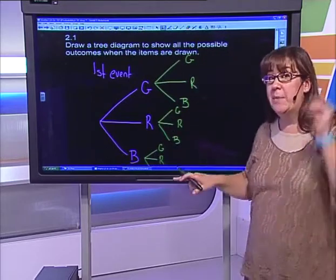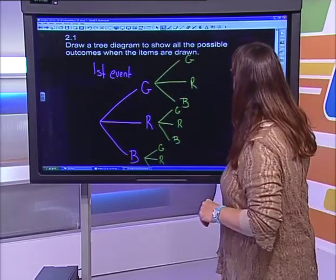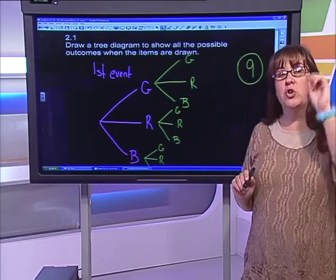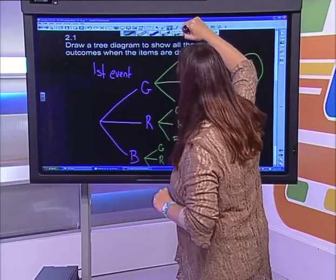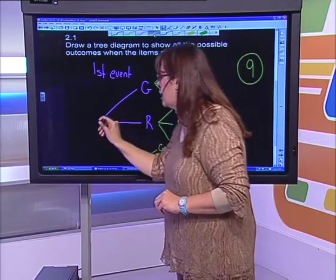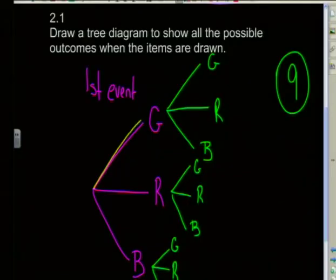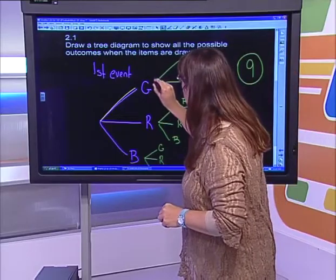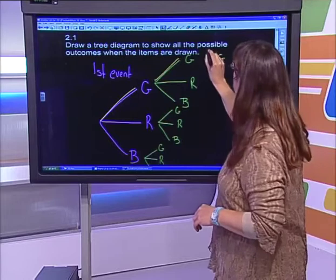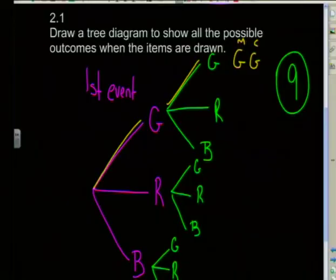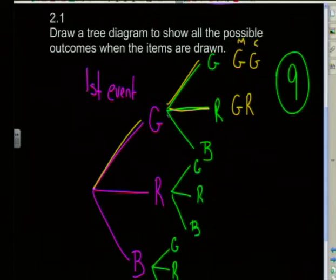How many outcomes have I got? It's however many branches I ended up with — and if I count them, I'll see there were nine branches in total. To read the outcomes, I start at the center and draw a line going to green, giving me a green marble, then go down one of the branches to green, giving me a green marble and a green cube. Then back to the beginning: green and red, then green and blue.